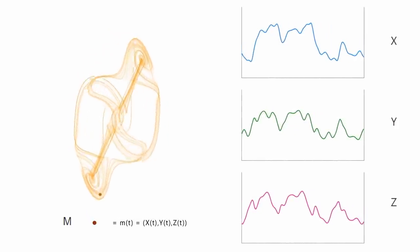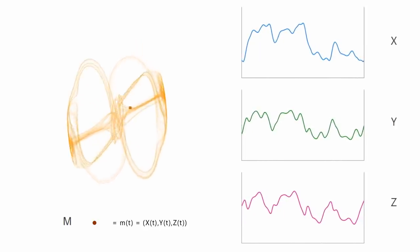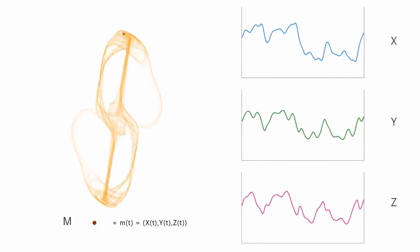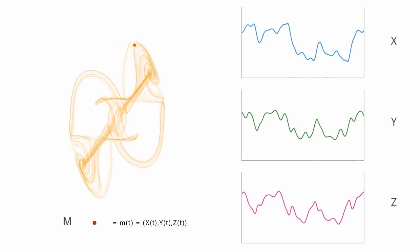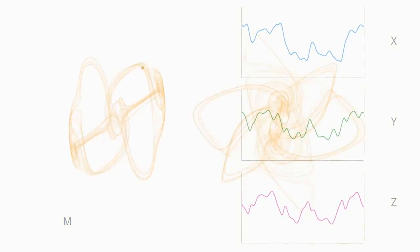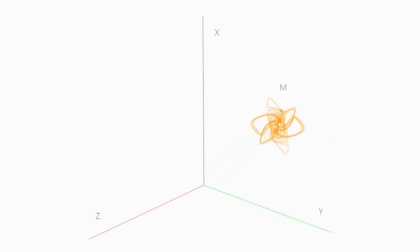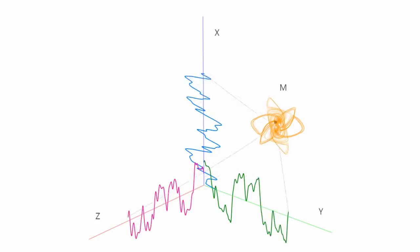Thus, M evolves in three dimensions, where each dimension corresponds to the X, Y, and Z values of the time series on the right. From a dynamical systems perspective, the time series X, Y, and Z are one-dimensional manifestations of the three-dimensional attractor M.